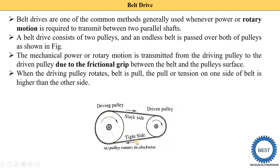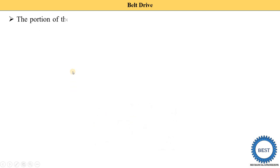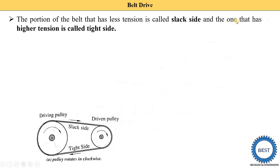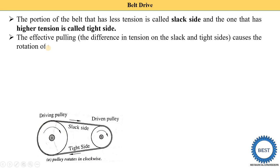The pull or tension on one side of the belt is higher than the other side. This side is called the tight side, where tension is higher. On the upper side of the driving pulley the tension is lower, so it is called the slack side. The portion of the belt with less tension is called the slack side, and the one with higher tension is called the tight side.